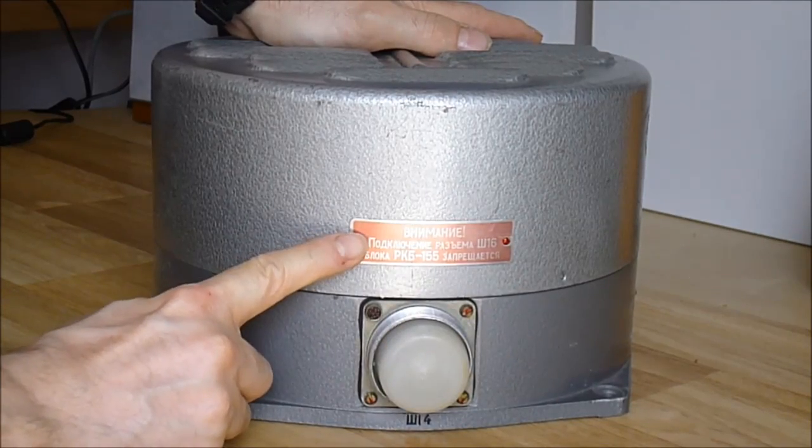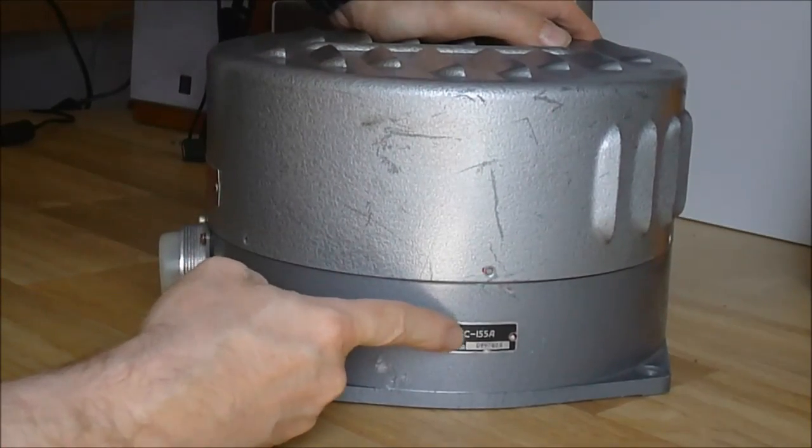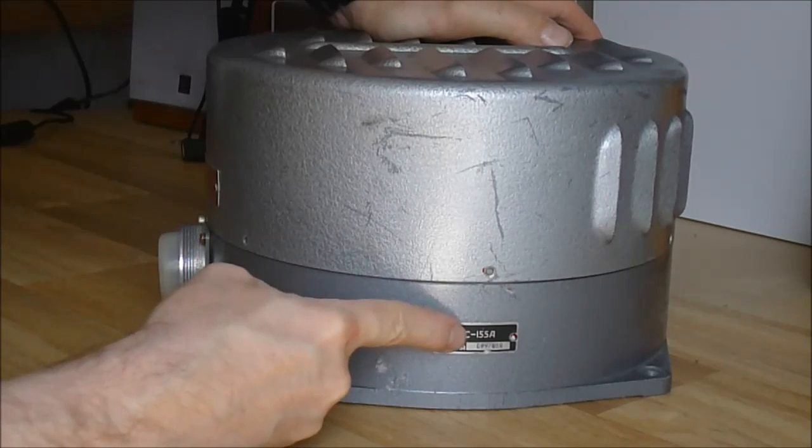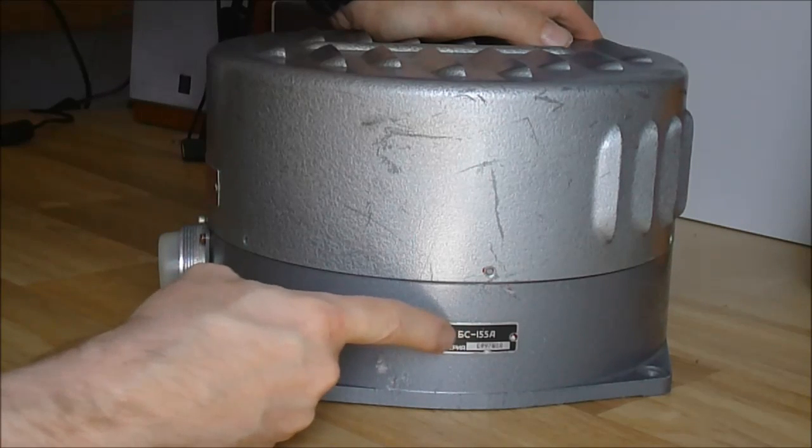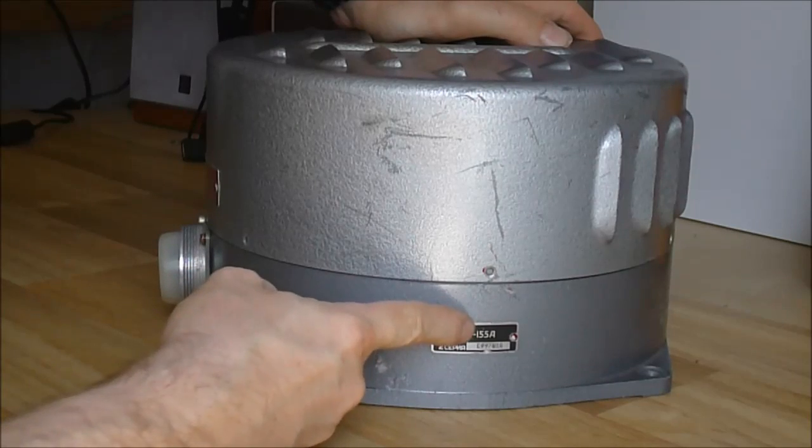There's a caution plate here with special instructions. Here is the model number, it is BC, so it gives BS in the convertible of Cyrillic, 155A.